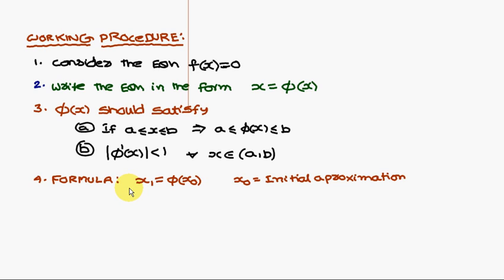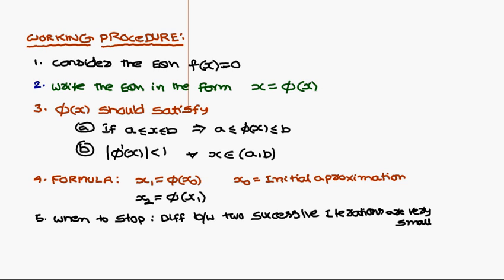The formula for the iteration method is x1 = phi(x0) — not f(x0), but phi(x0) — where x0 is the initial approximation. Similarly, x2 = phi(x1), and so on. We stop this procedure when the difference between two consecutive iterations is very small.